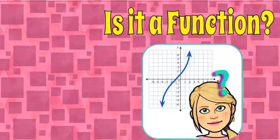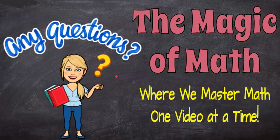So there you have it — that's how you determine if a graph represents a relation and a function. Remember, all graphs are relations. All mapping diagrams, tables, or ordered pairs show a relationship. But not all relations are functions. Thanks for joining me today at the Magic of Math, where we continue to master math one video at a time. Have a great day — I hope you'll subscribe and come back soon.